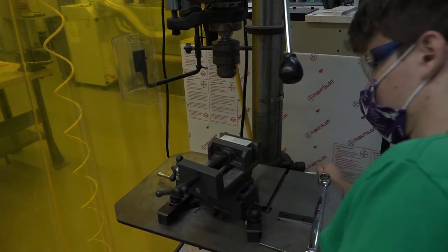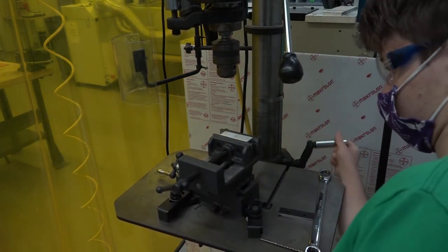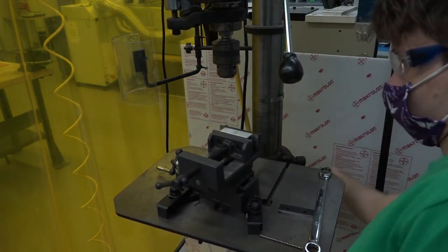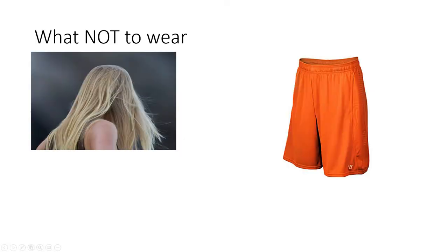First, safety procedures must be considered. The most important safety procedure to consider is to ensure that you are not wearing anything that could get caught in the rotating drill bit. This includes, but is not limited to, long hair, loose clothing, and jewelry.